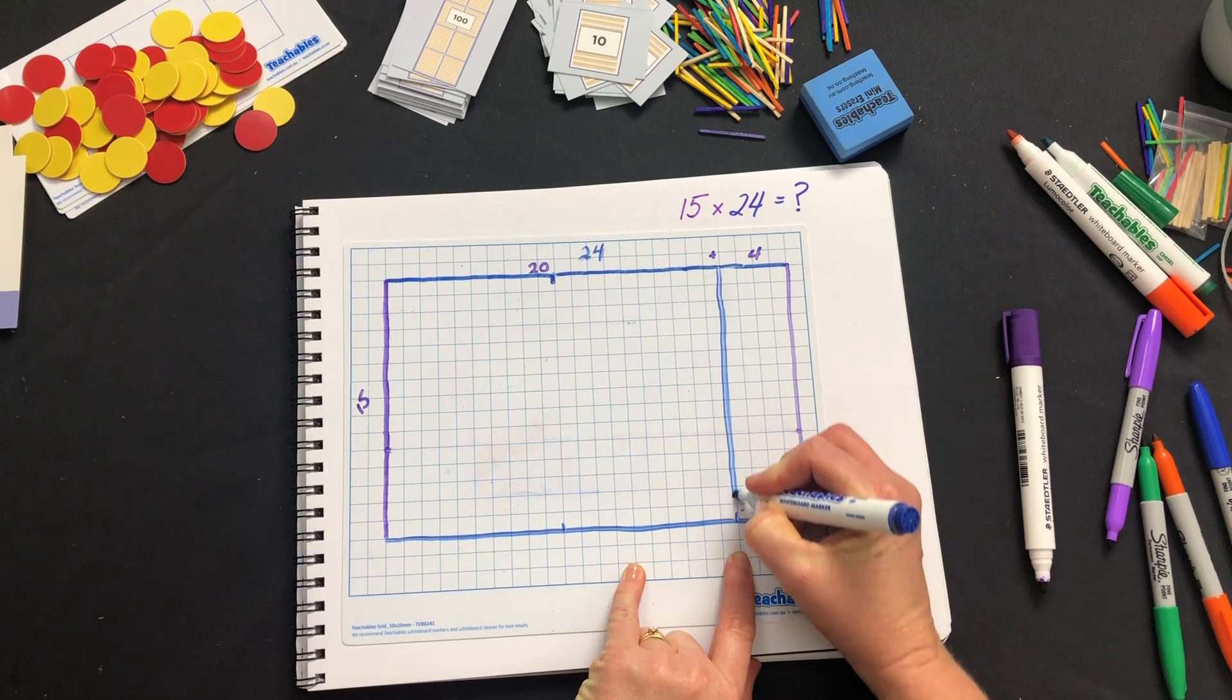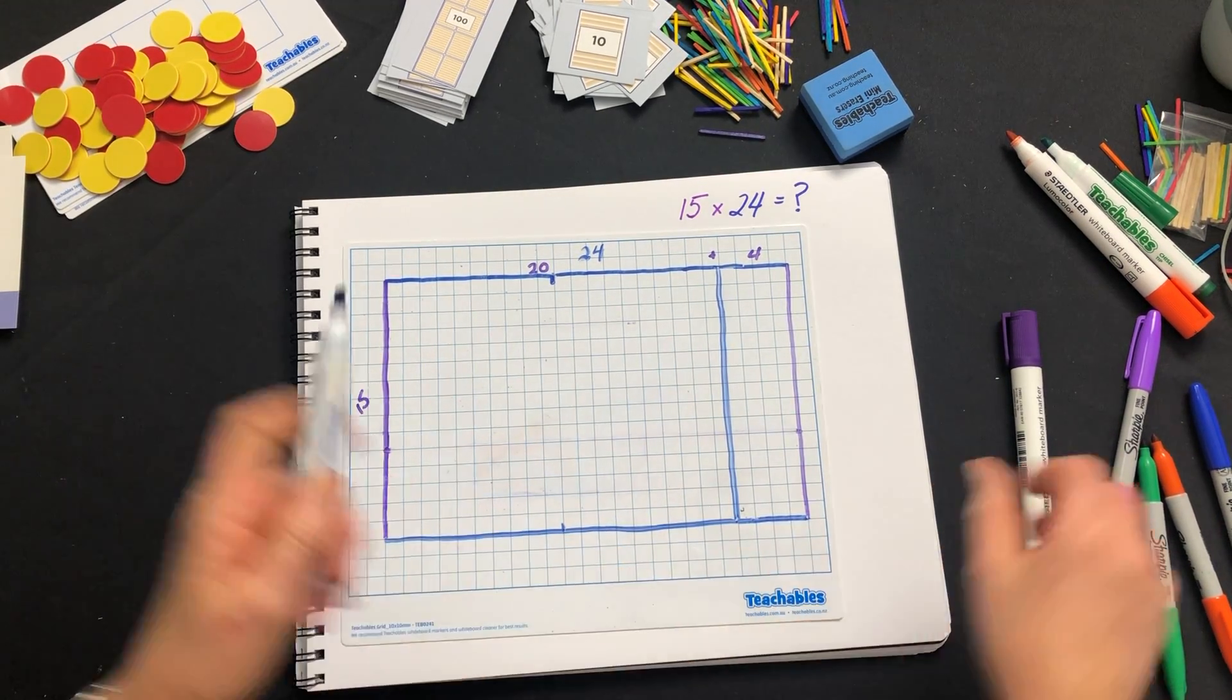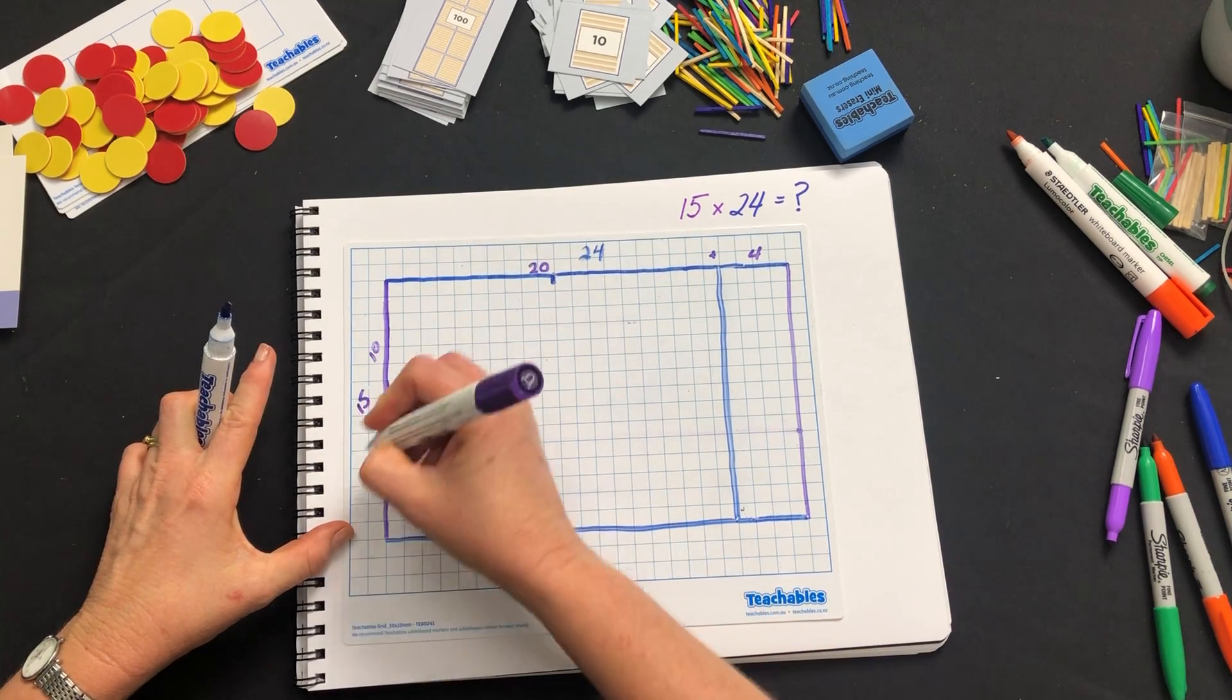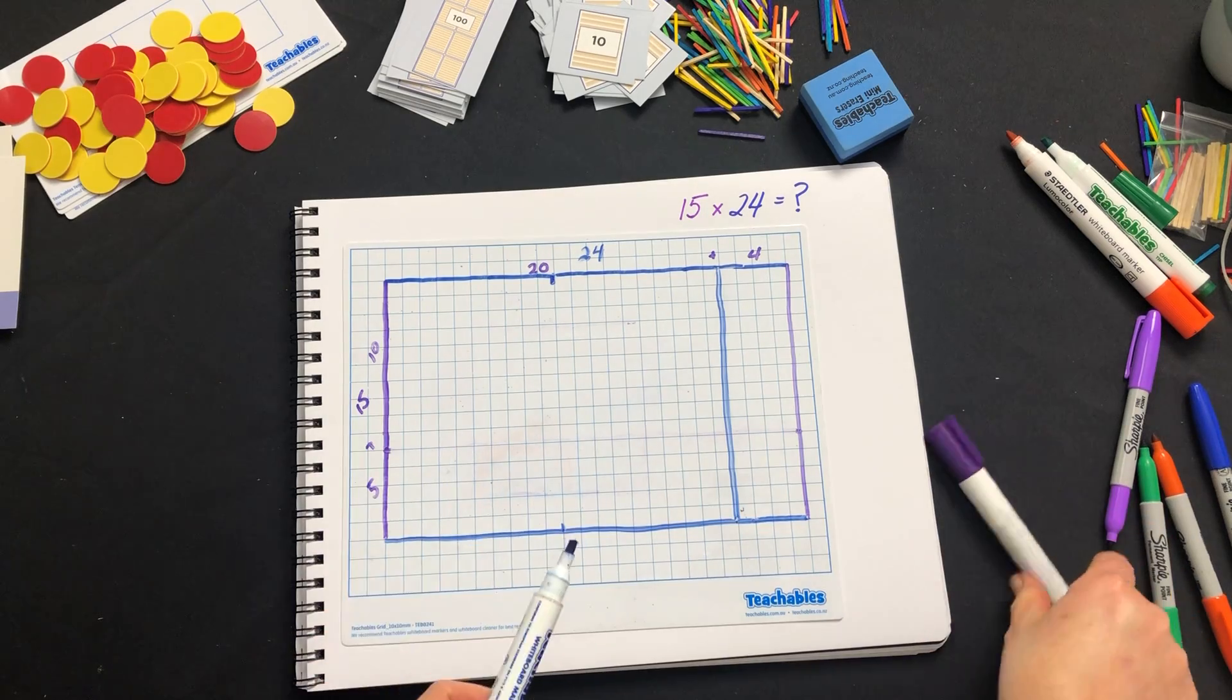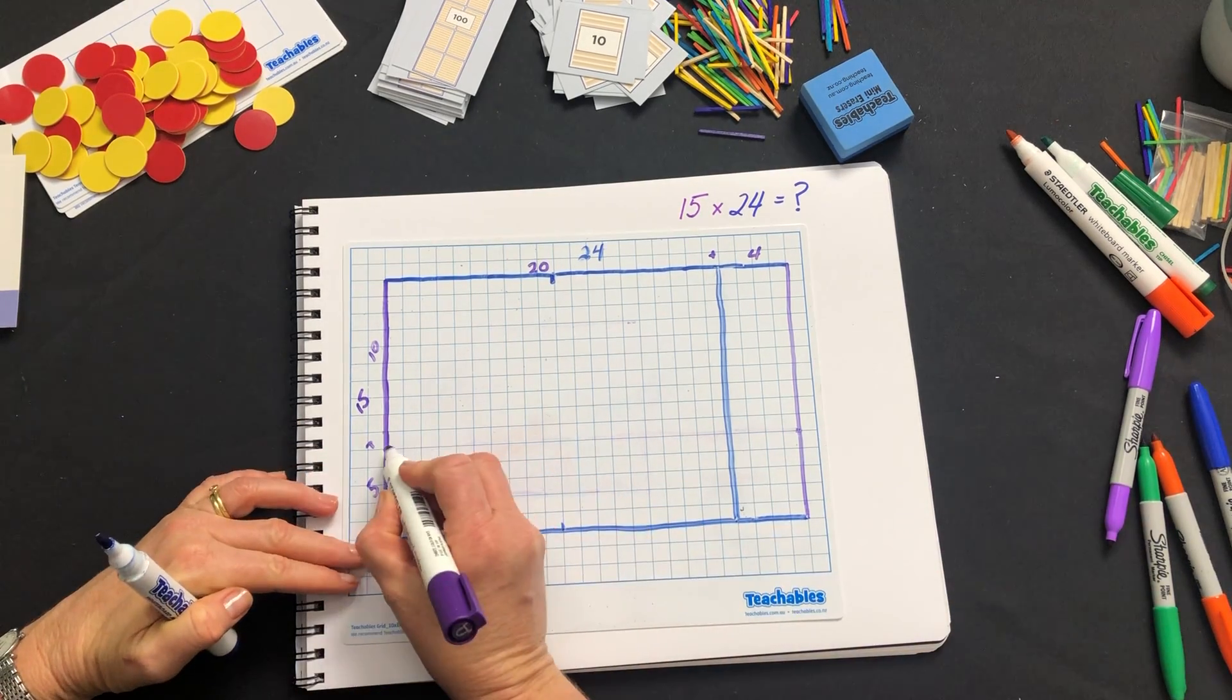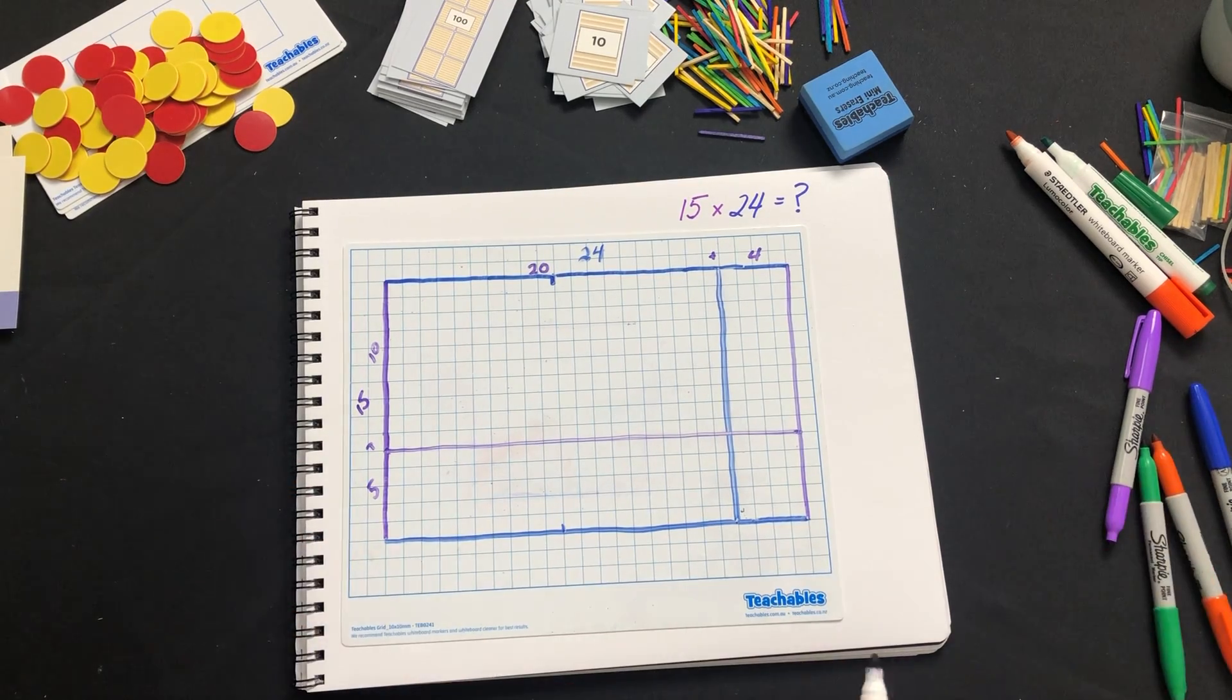So we draw down here splitting up our 20 and 4. Now we have our 15 is 10 plus 5. So we're breaking it into smaller multiplications that the student will understand or be able to carry out.